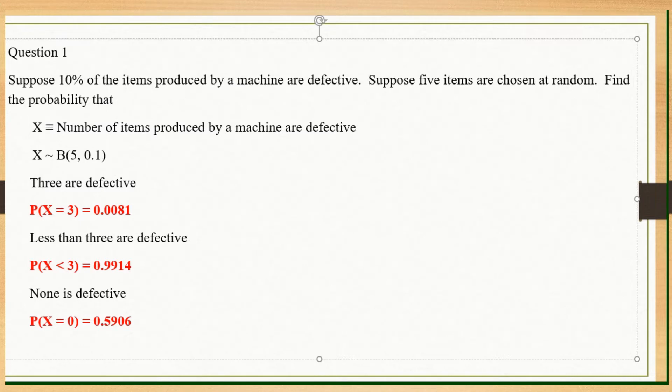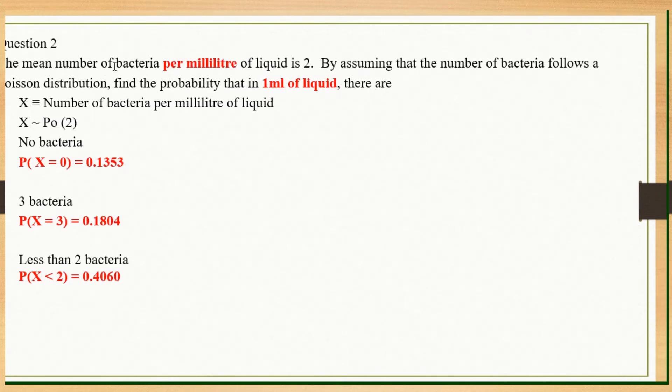Okay, next slide. Question 2. The number of bacteria per milliliter of liquid is 2. That means 1 milliliter is 2. Assuming it follows a Poisson distribution, find the probability there in 1 milliliter. Why have I highlighted these 2? Because they are both the same. So you don't need to change. You just write your event, number per milliliter of liquid, then you write your Poisson distribution and just calculate as usual. No issues here as well.